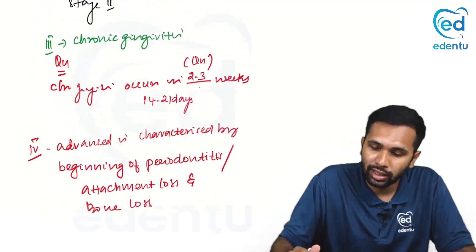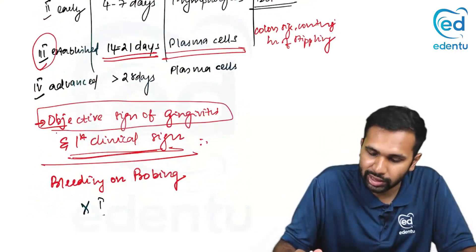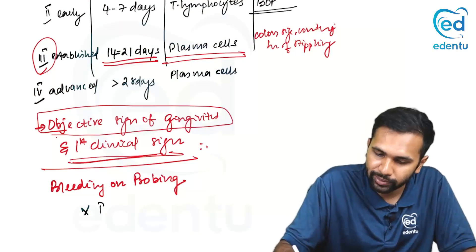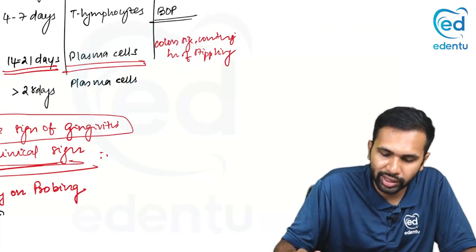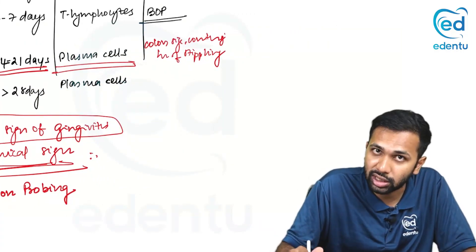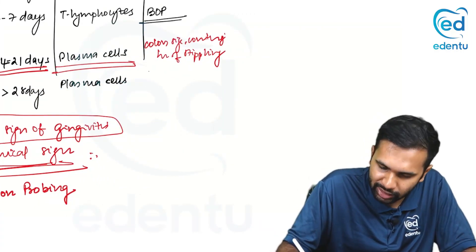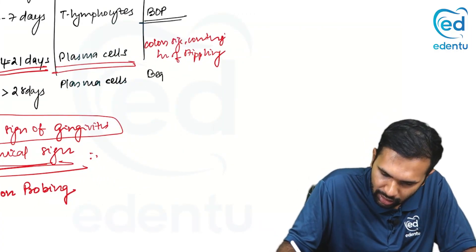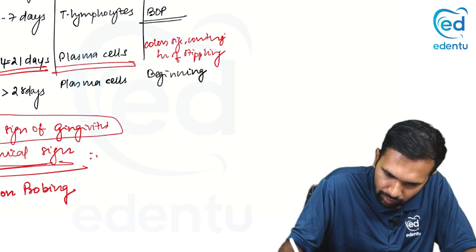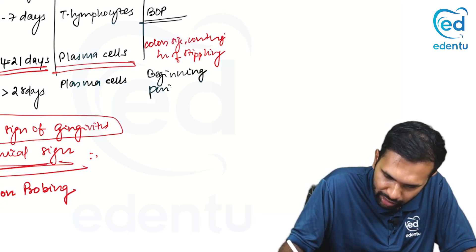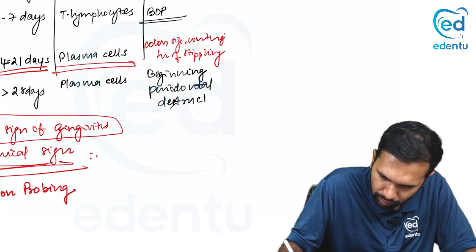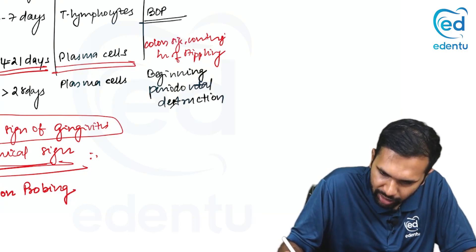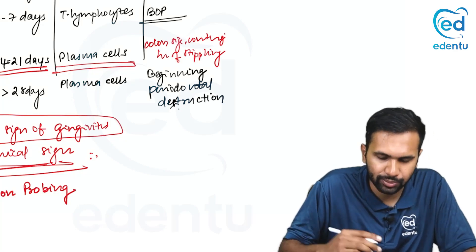That is the difference between stage 3 and stage 4. Even though we call it stage 4 gingivitis, it is actually the beginning stage of periodontitis — the gradual shift from gingivitis to periodontitis. That is why stage 4, even though written as advanced gingivitis, represents beginning periodontal destruction.